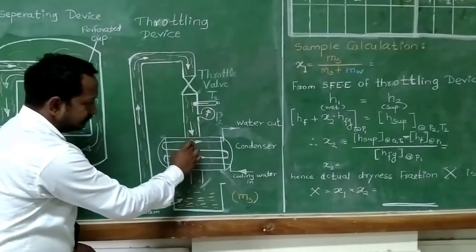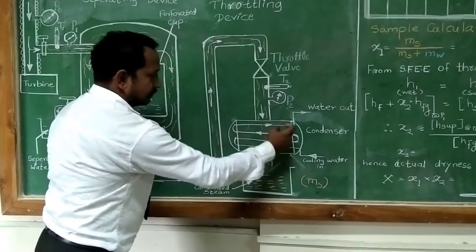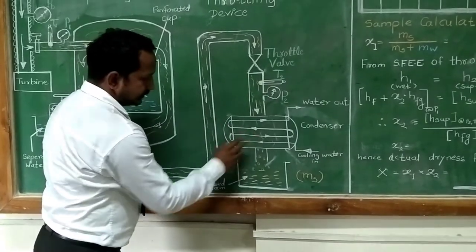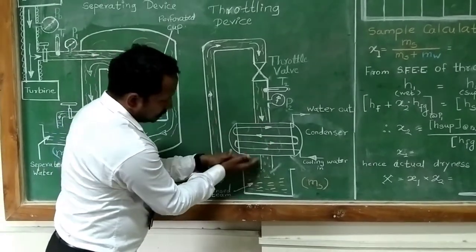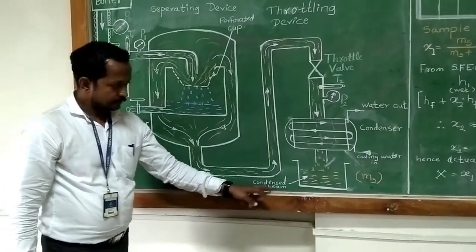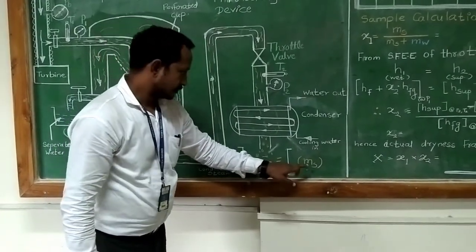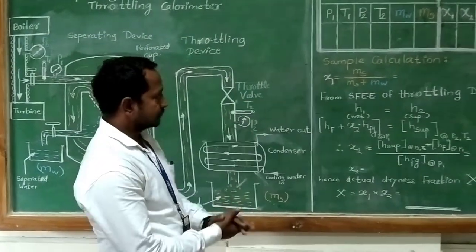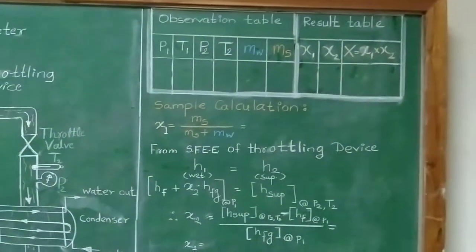Further, the steam is given to a condenser, where some cooling water is already flowing through the pipeline of the condenser. The steam which is coming out of the throttle valve is then given to the condenser. There is heat exchange, and that steam is converted into liquid form — we can say the steam is condensed. The mass which is measured here is denoted as Ms. Now, let us go to the calculations — what are the formulas and how we are going to calculate the dryness fraction of the steam using this device.